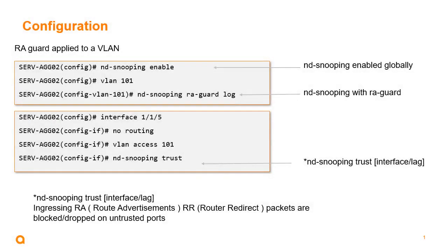A couple of configuration notes: first, configure ND snooping globally and enable it. Then, under the appropriate VLAN where you want RA guard, issue the ND snooping RA guard command along with the optional log command to enable the feature. Finally, apply it to the interface — either trust the interface or leave it untrusted.